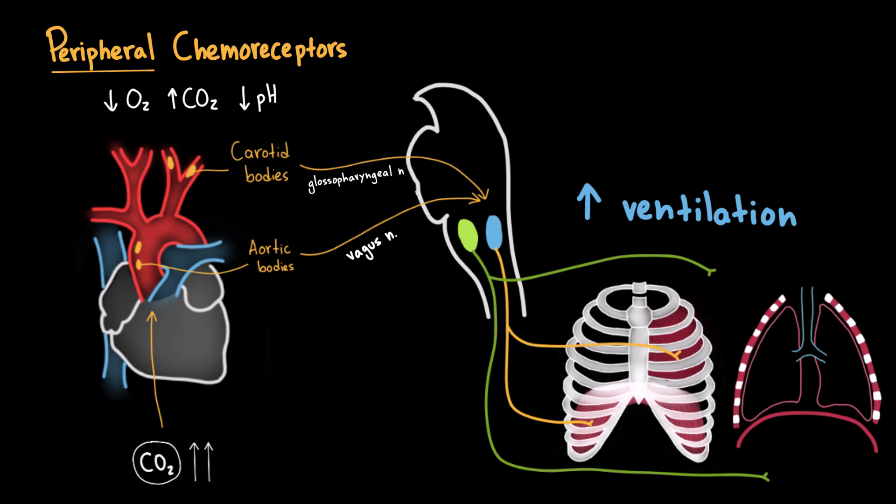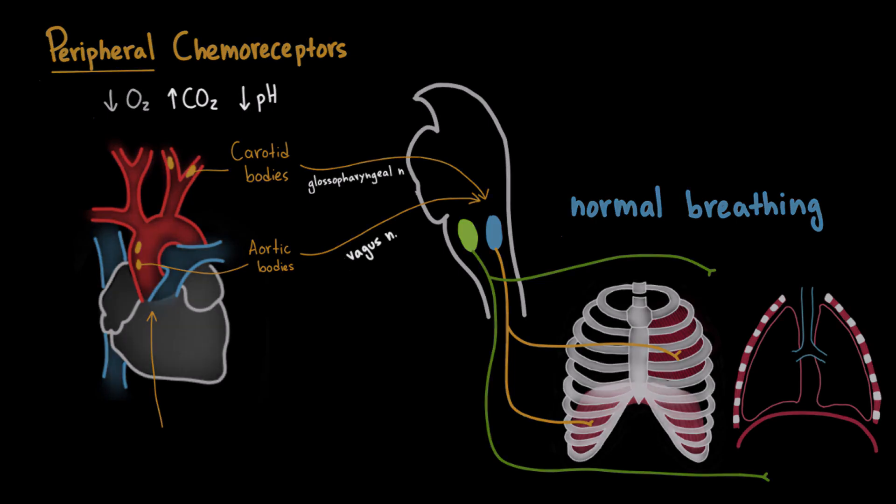Once the levels return to normal, the stimulus disappears and your breathing slows down again, going back to its baseline rhythm. This continuous feedback ensures that your body maintains homeostasis.